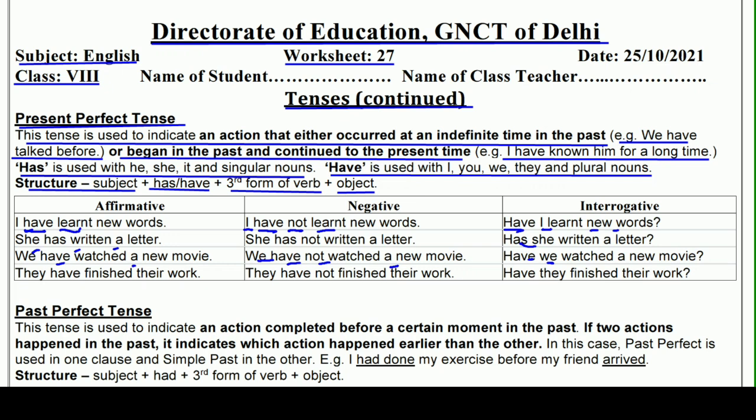We have watched a new movie — हम एक नई movie देख चुके हैं। We have not watched a new movie। Have we watched a new movie? — we के साथ 'have' लगाते हैं इसलिए have बाहर निकाल दिया। They have finished their work — वे अपना काम खत्म कर चुके हैं। They have not finished their work। Have they finished their work?